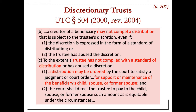The third Restatement of Trusts takes a different view from the UTC. It holds that a creditor of a beneficiary can reach any distribution to a beneficiary. The Restatement takes a controversial position because it allows the creditor to compel the trustee and then take any distribution that the beneficiary could have taken.